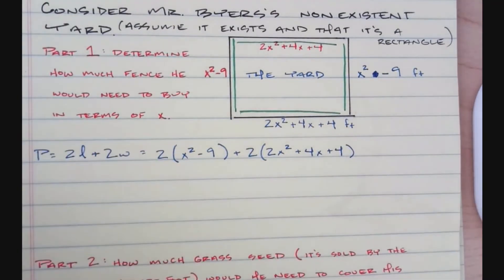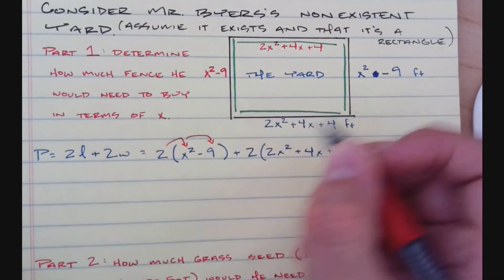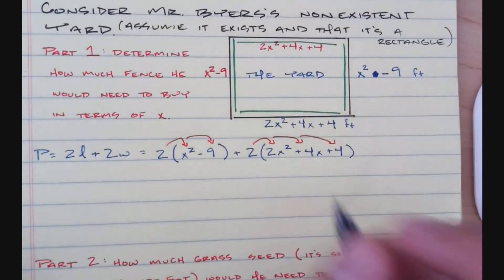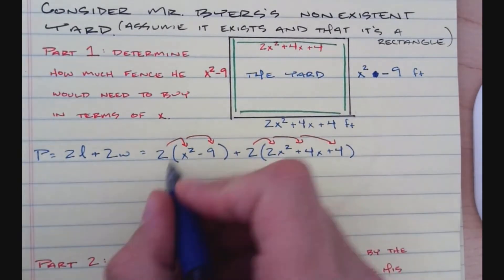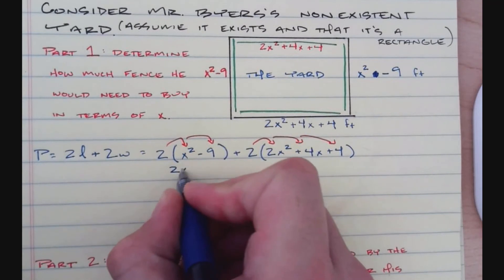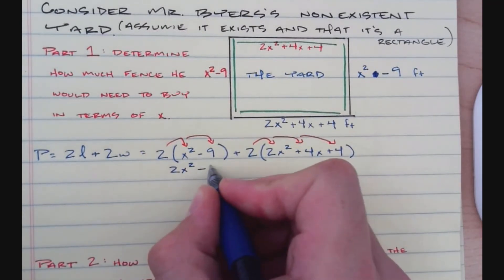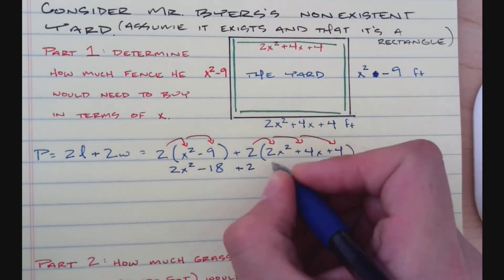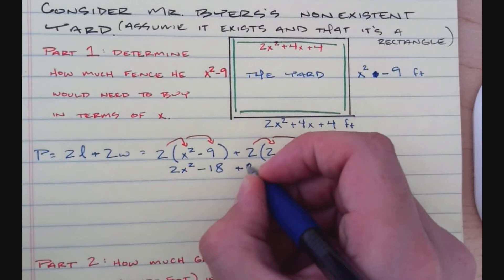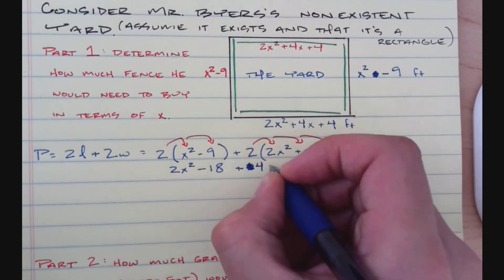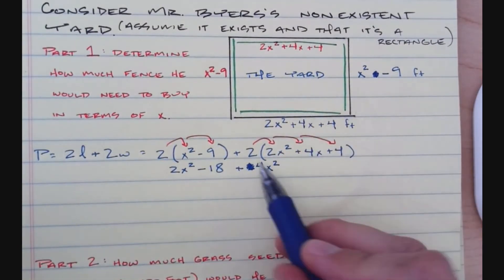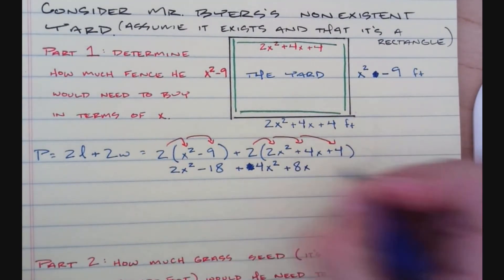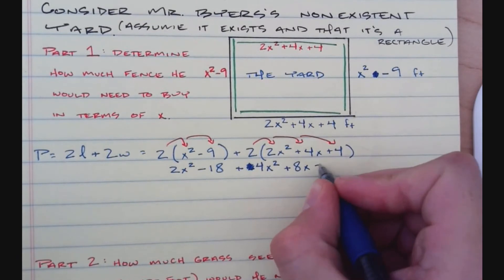Now I'm going to distribute everything with the 2 — I doubled all of it. So I get 2x squared minus 18, then I add 2 times 2x squared which gives me 4x squared, then 2 times 4x which gives me 8x, and 2 times 4 which gives me plus 8.